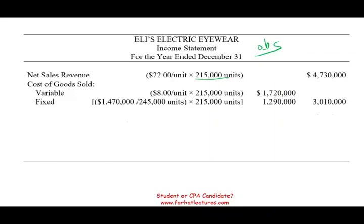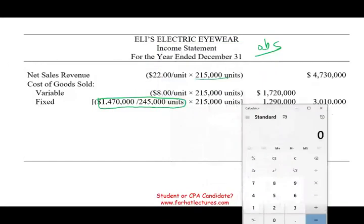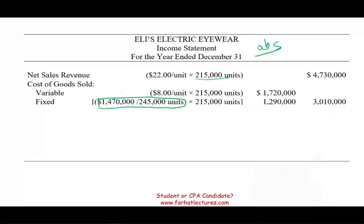It's important to find the fixed manufacturing overhead cost per unit. Taking $1,470,000 divided by 245,000 units gives us $6 per unit. Multiply $6 by 215,000 units sold, which equals $1,290,000. Together, variable and fixed manufacturing cost gives us a total cost of goods sold of $3,010,000. Therefore, gross profit — sales minus cost of goods sold — is $1,720,000.